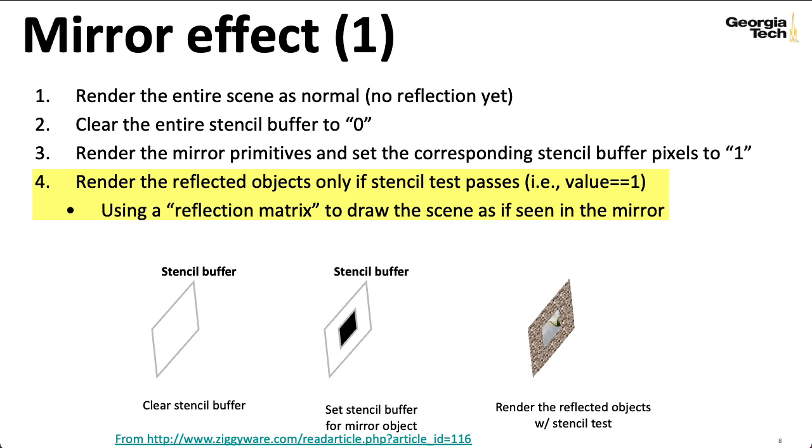But when you run the main renderer for the mirror, you include something called a reflection matrix in that big set of transformations that included the model-to-world transformation and the world-to-view transformation. Somewhere in that sequence, you can put in a matrix that basically flips the scene around the plane of the mirror so that when you're rendering the objects in the mirror according to the stencil buffer, you're rendering the reflected scene.